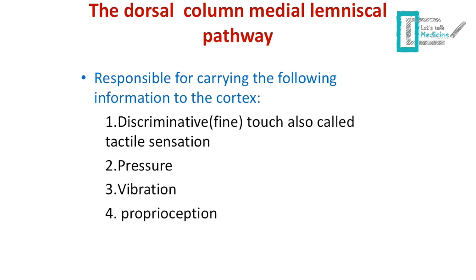Proprioception is like sharing your location — the brain needs to know where your limbs are located. Receptors within the tendons and joints send this signal to the brain. Proprioception is of two types: some is under conscious awareness, where the signal reaches the cortex, and some is unconscious, where the signal reaches the cerebellum.